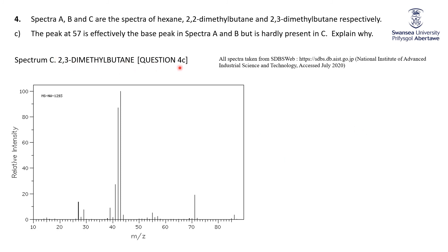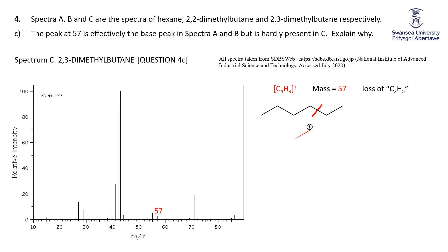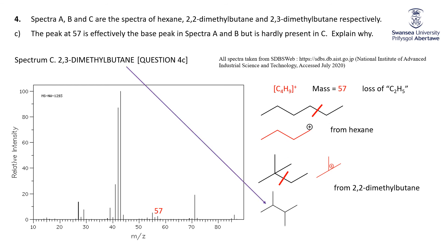Now, 2,3-dimethylbutane: the peak at 57 is the base peak in spectra A and B, but is hardly present in C — just a teeny little blip. Why? Well, mass of 57 is C4H9. When we think about hexane, we lose C2H5 to get down to 57 — we can split it there, and there's the C4H9 left. When we look at 2,2-dimethylbutane, we cut there so that we're losing a C2H5 to give us C4H9 — that nice tertiary carbocation. So it's quite easy to see how we lose the C2H5 to get C4H9.